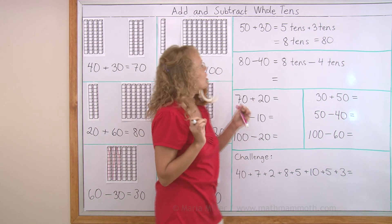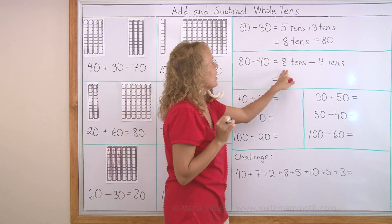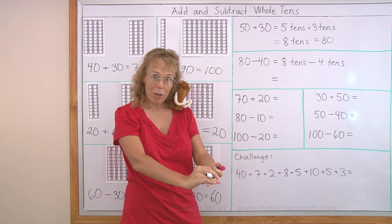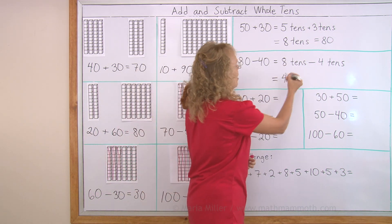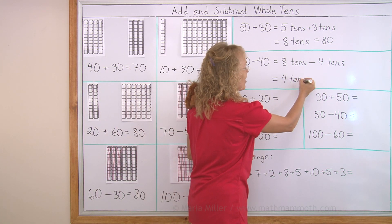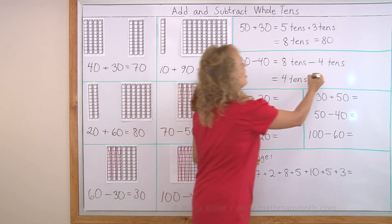Oh, the same with subtraction. Eighty minus forty. Eight tens minus four tens. Subtract eight minus four. That's just four. But you were subtracting tens. So the answer is four tens or forty.